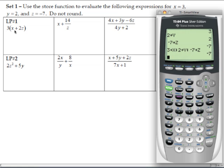Now to evaluate these expressions, just plug them into the calculator. For the first one: 3, open parenthesis, x plus 2z, close parenthesis, enter. It comes out to negative 33.